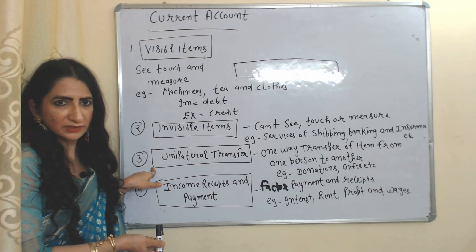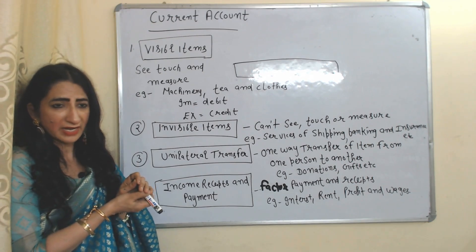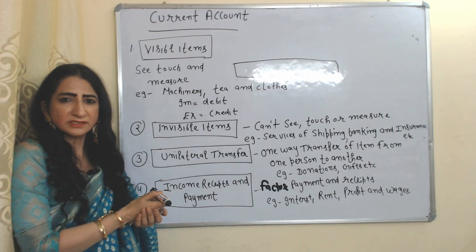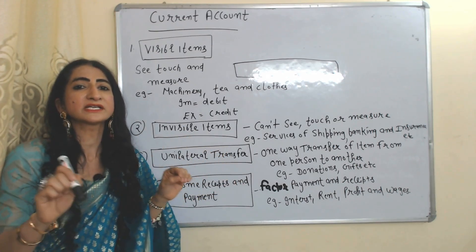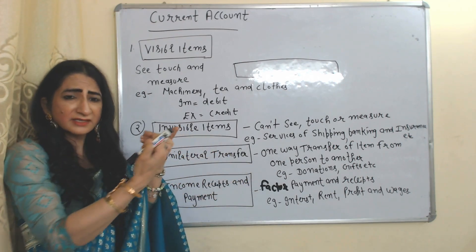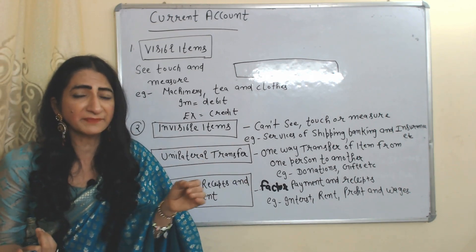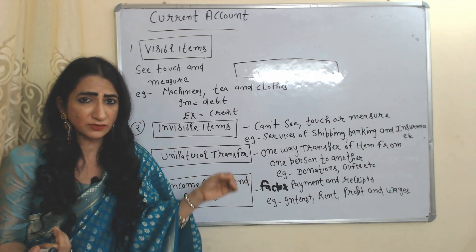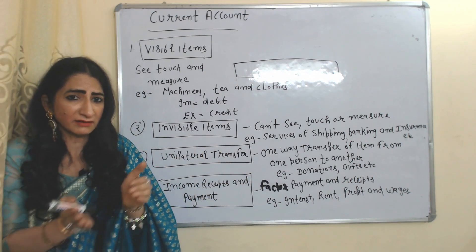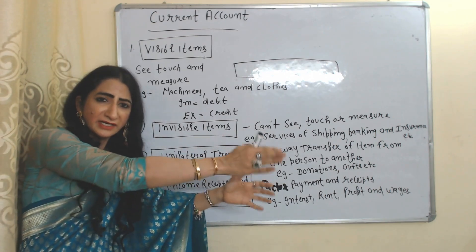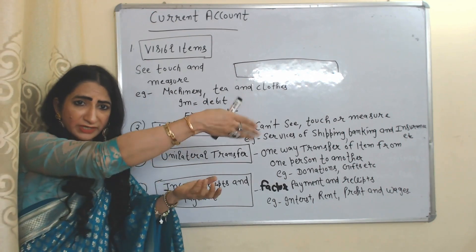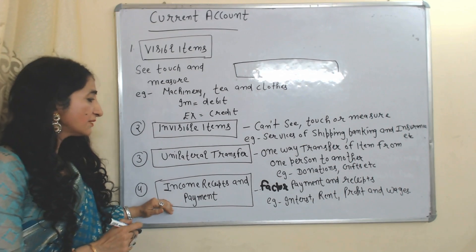Next is unilateral transfer. Unilateral transfer means a one-way transfer of items from one person to another — when we give something without expecting anything in return, for example, donations and gifts. When we are receiving donations and gifts from another country, it will be credited in the Balance of Payment account because money is coming into our country. But if we are giving donations and gifts to another country, it will be debited.